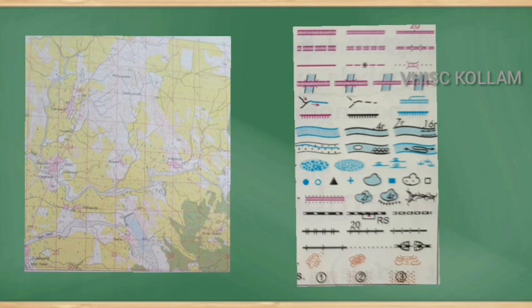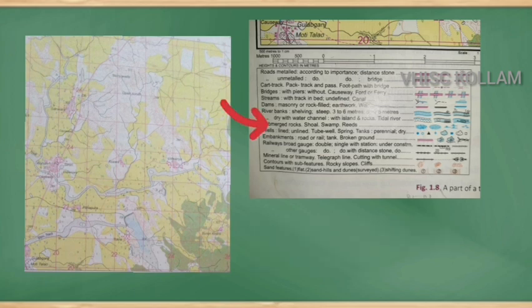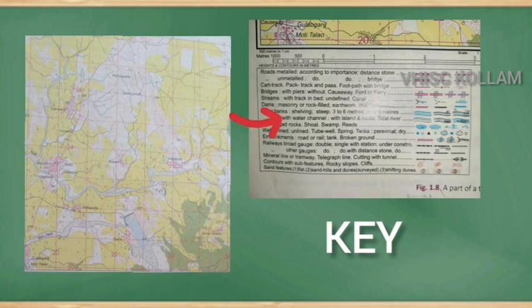Why do we use these symbols? With the help of these symbols, it becomes very easy to draw and understand a map. Every map has a key which helps us to understand the map. The meanings of the symbols used in a map are usually given in a list on the map itself. Such a list is called a key.